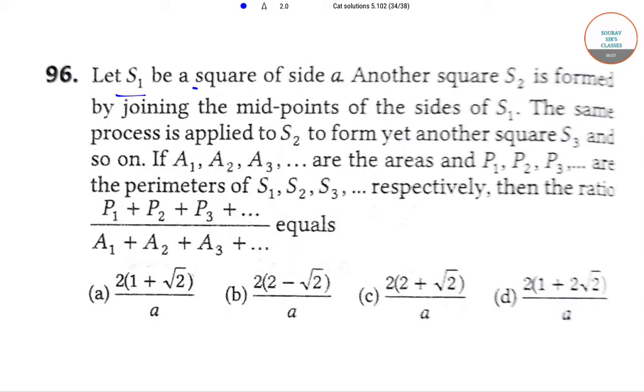Let S1 be a square of side A. Another square S2 is formed by joining the midpoints of the sides of S1. The same process is applied to S2 to form yet another square S3 and so on.